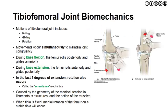The joint mechanics of the tibiofemoral joint are rolling, gliding, as well as rotation, occurring simultaneously to maintain joint congruency throughout range of motion. As we consider knee flexion, the femur rolls posterior and will glide anterior. During knee extension, the femur rolls anterior and glides posterior. In the last five degrees of extension, rotation also occurs — this is what is known as the screw-home mechanism. This exists because of the geometry of the menisci, the tension of the surrounding static ligamentous structures, as well as action of muscle. If we consider the tibia to be fixed, the screw-home mechanism occurs with medial rotation of the femur on a stable tibia.